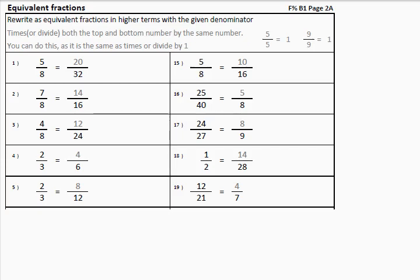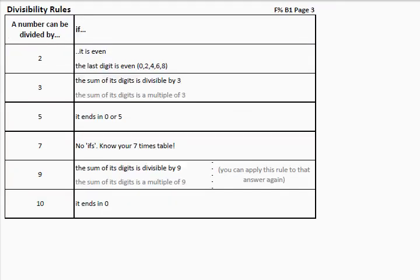Now, the next topic: we want to simplify fractions to write them in the simplest form. To be able to do that, you need to see what number you can divide both the top and bottom numbers of the fraction with. Therefore, we need to quickly look at our divisibility rules.